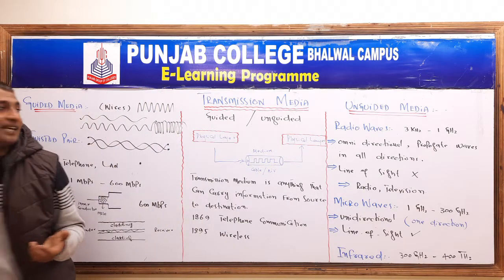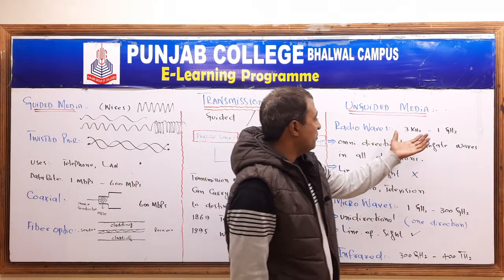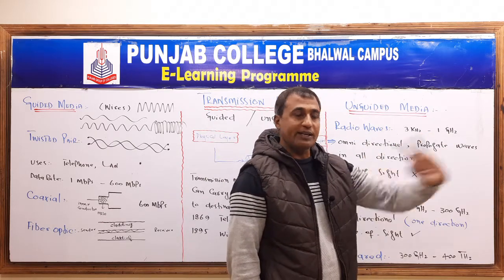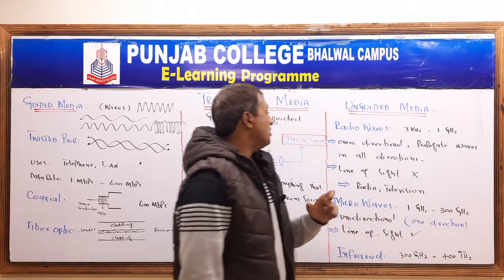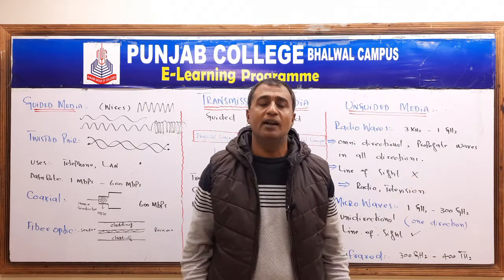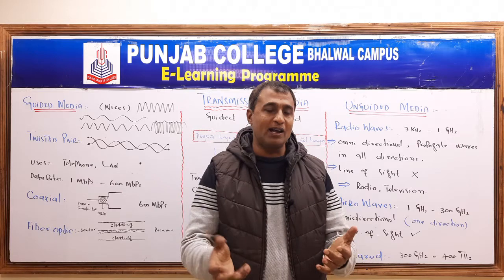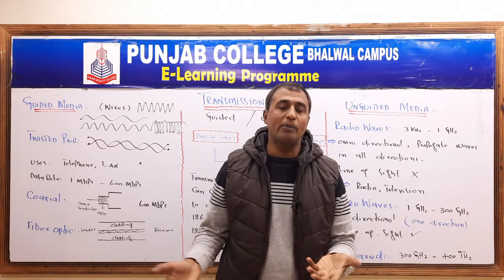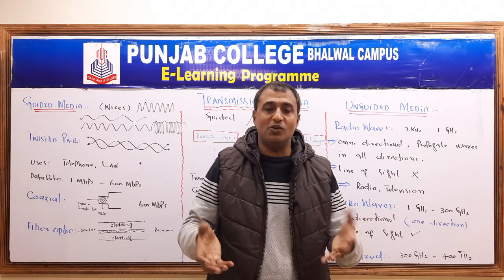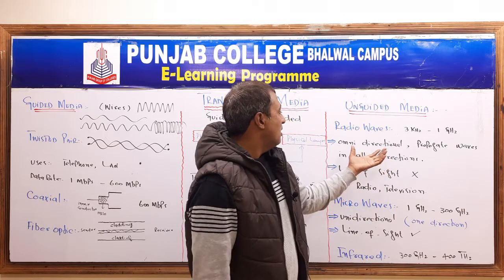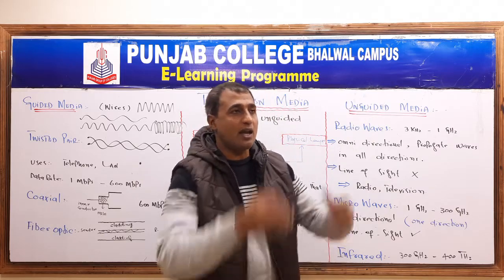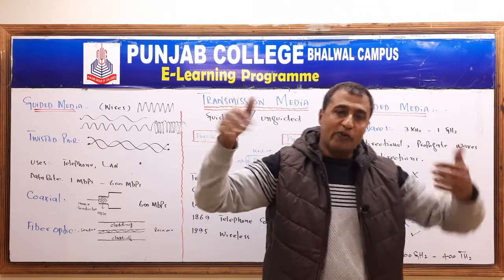So, the first type of wireless signal is radio waves. Radio waves have a frequency range from 3 kHz to 1 GHz. Radio waves are omnidirectional, meaning they propagate in all directions.